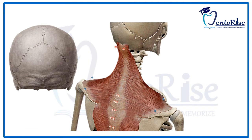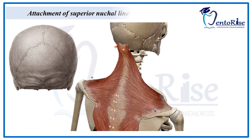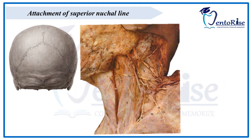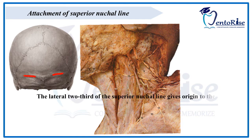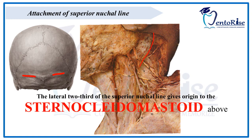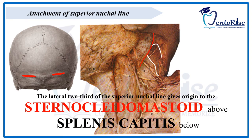Now let's discuss the attachments of the superior nuchal line. The medial one-third of the superior nuchal line gives origin to the trapezius muscle. The lateral two-thirds give origin to two muscles: the sternocleidomastoid muscle above, marked in the figure with red, and the splenius capitis muscle, marked in the figure with white.